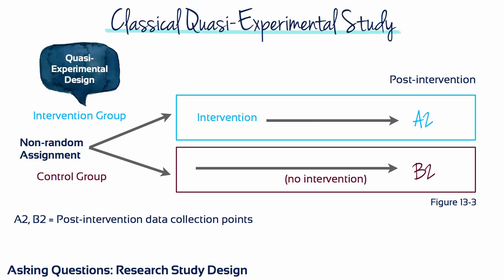Sometimes it is not practical or not ethical to randomly assign people to groups. When random assignment cannot occur, the study is a quasi-experimental study. The subjects are not randomized to the treatment groups, but other aspects of the design are the same as for a true experimental design.